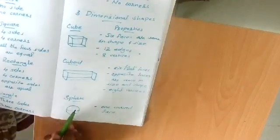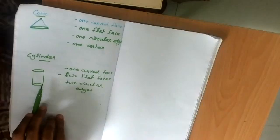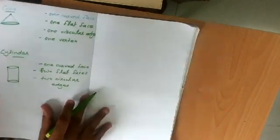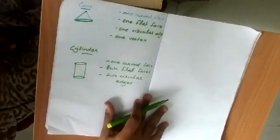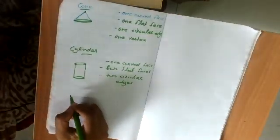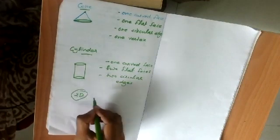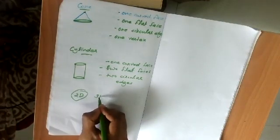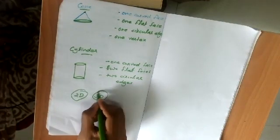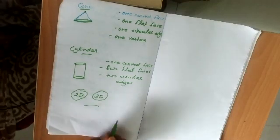So we have learned about both 2D shapes — cube, cuboid, sphere, cone, and cylinder — as the different three-dimensional shapes. Thank you!